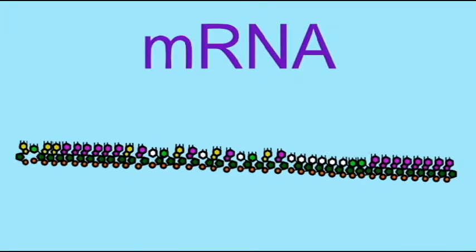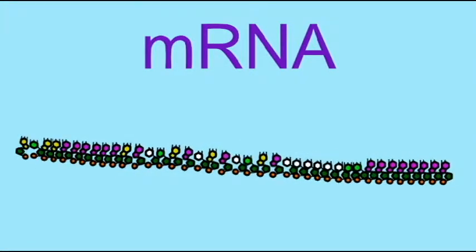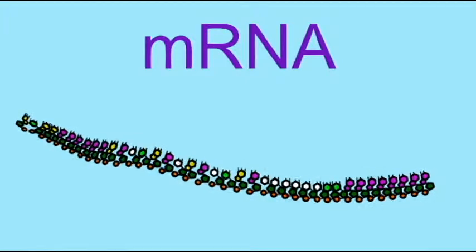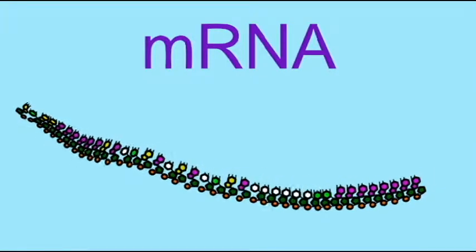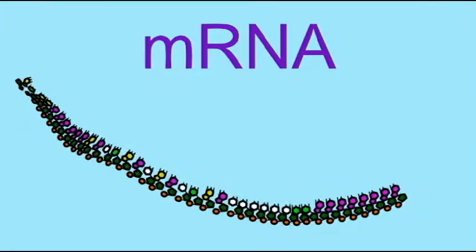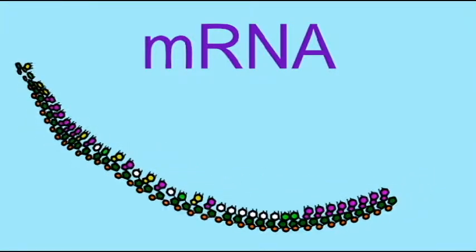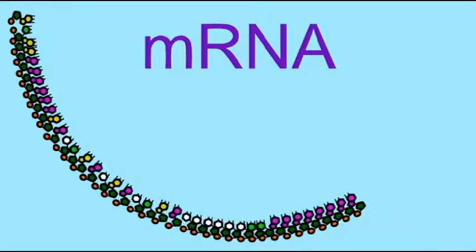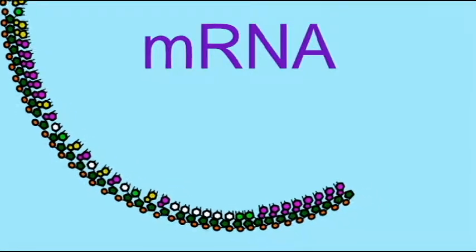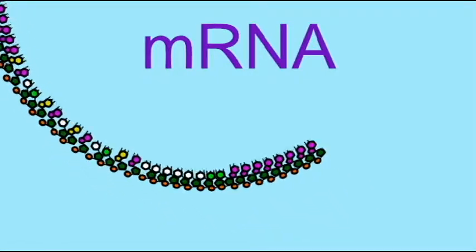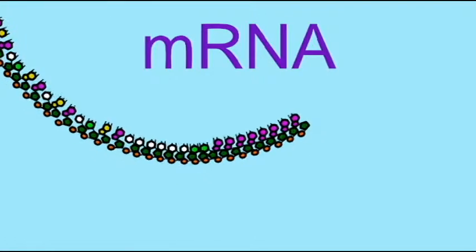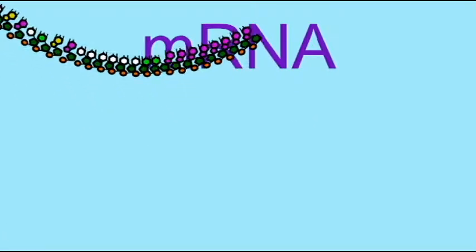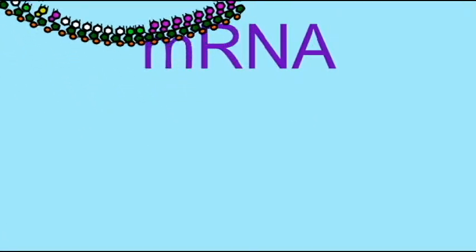In general, messenger RNAs or mRNAs are not functional in and of themselves. They code for proteins which are then functional. It is the proteins which will perform an enzymatic reaction or form a receptor. The mRNA is the instruction on how to make this protein.